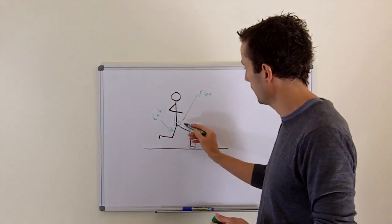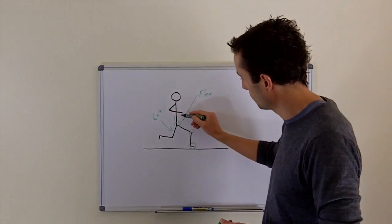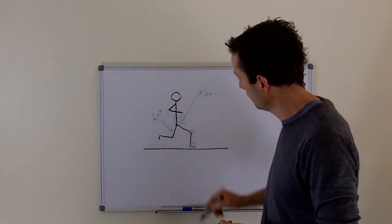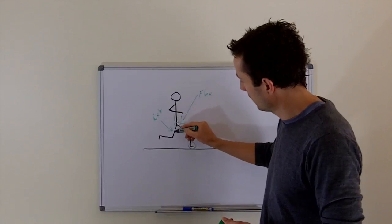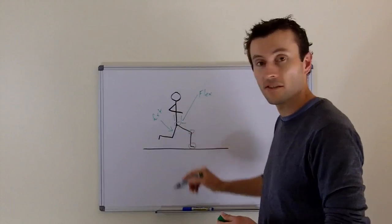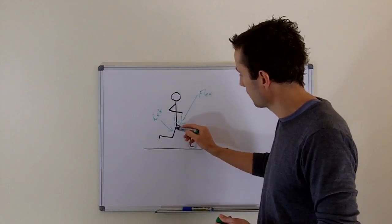When the joint is flexed, it's got a bend in it. The hip joint here has a bend and an angle. And when it's straight, as we can see on the following leg here, it's actually extended.